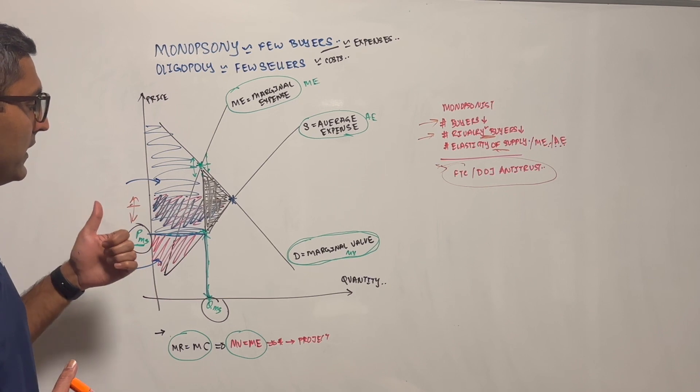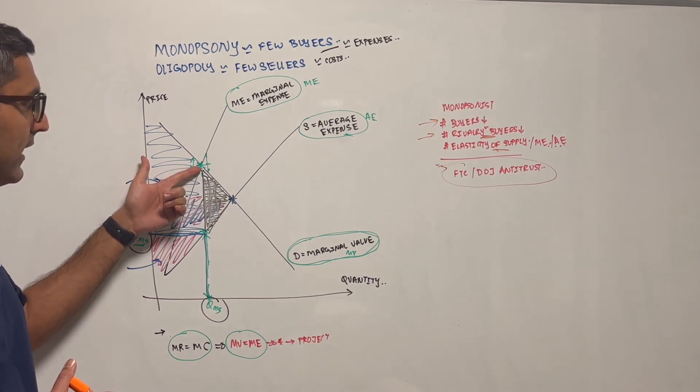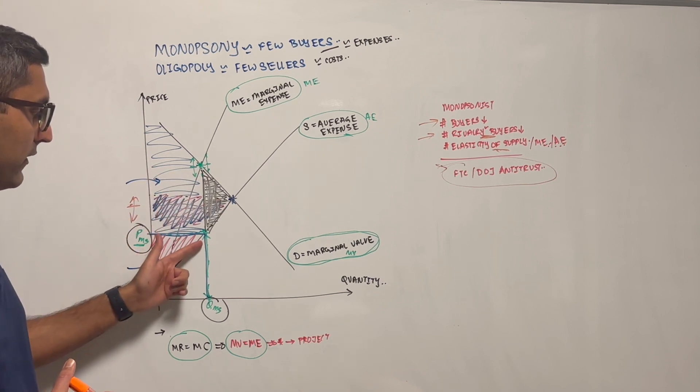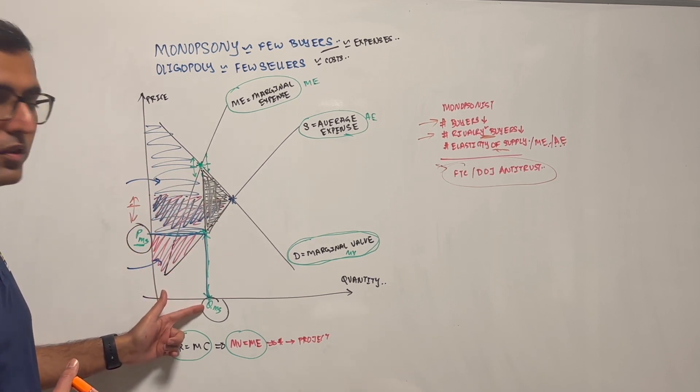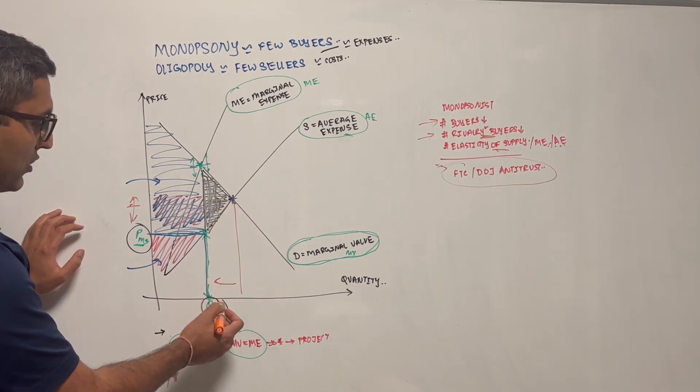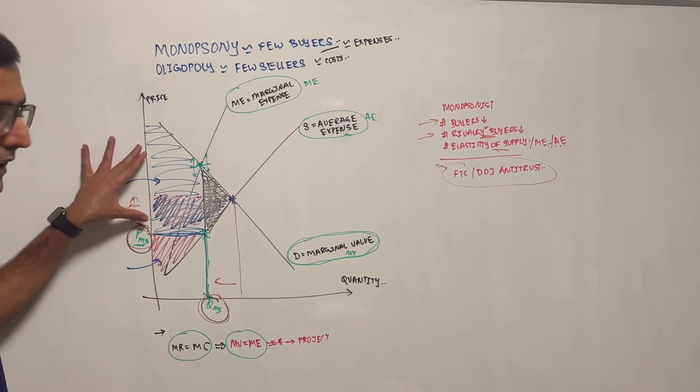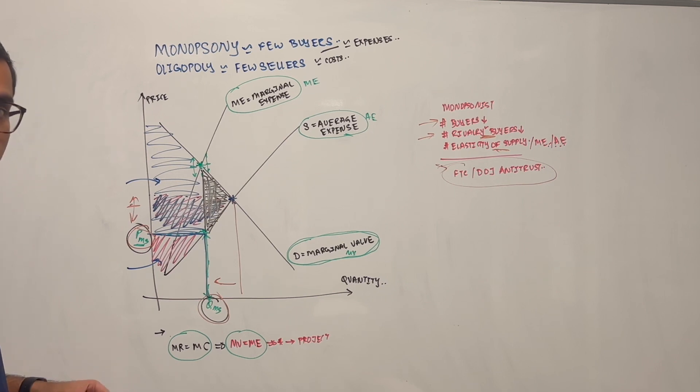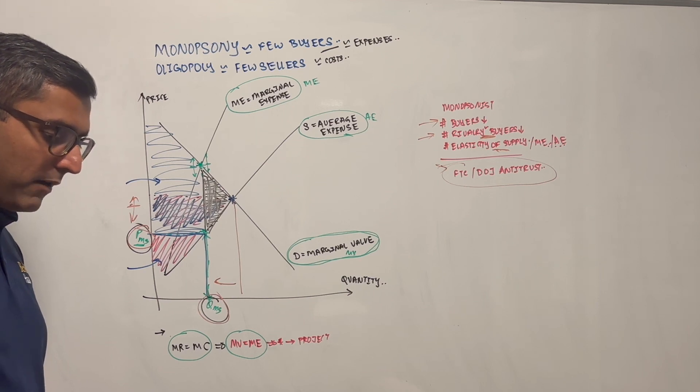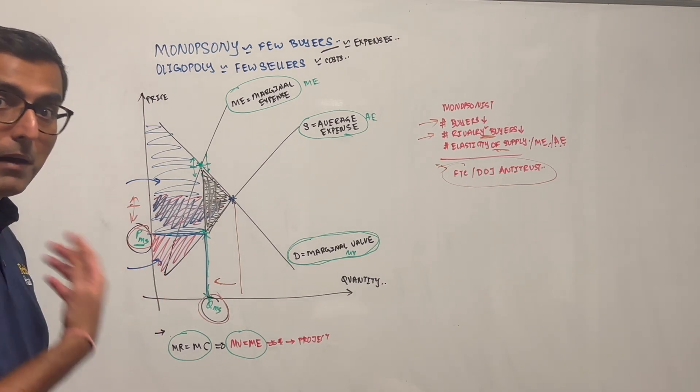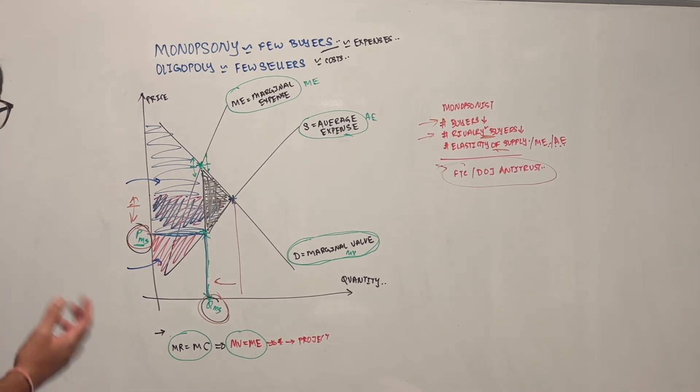We understand monopsonist, we understand how the price is based on marginal expense and marginal value at the intersection of the demand curve and the quantity that this monopsonist will buy. They'll buy much lower than what they would have bought, but at a much lower price, and enjoy thus a much higher surplus at the expense of some dead weight cost associated with it. So monopsonist - exactly the opposite from a monopolist - which is from the seller's standpoint, not the buyer's standpoint, because when buyers have a lot of power in certain situations.